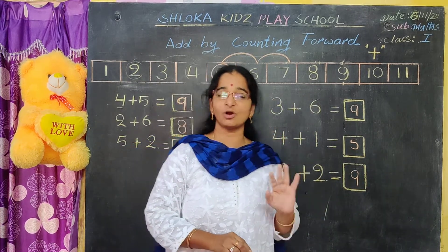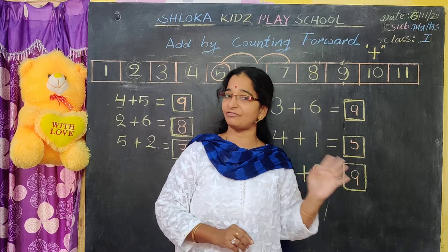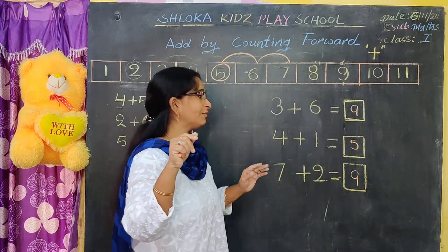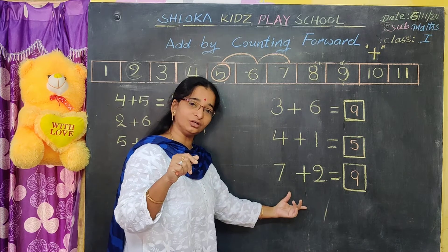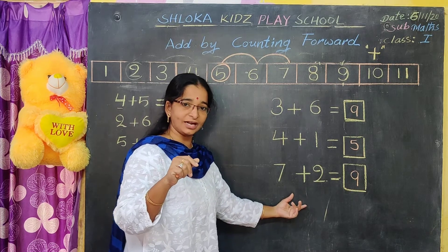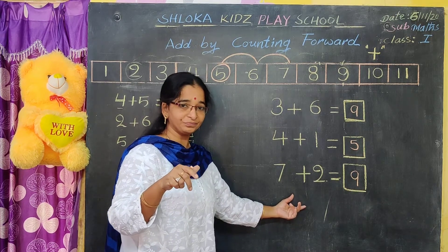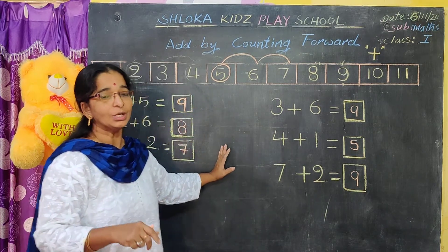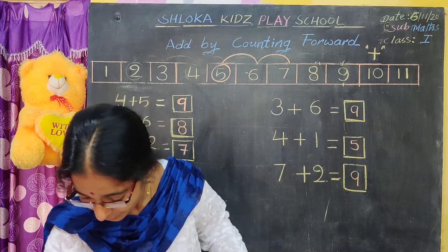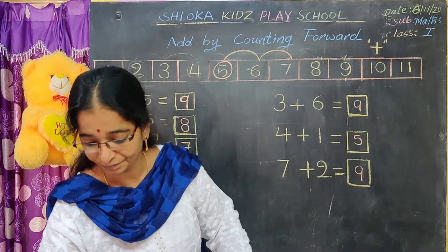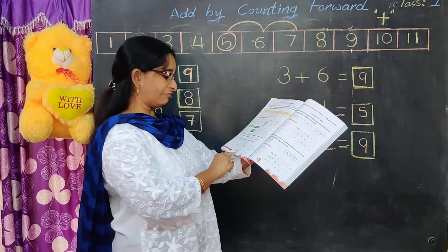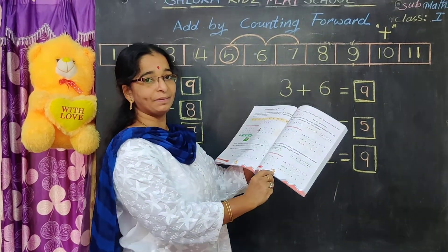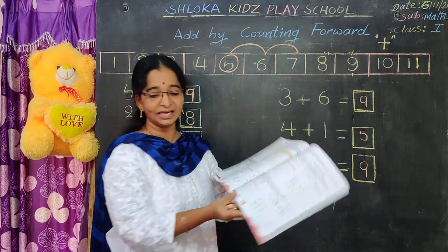You are not small children now that you are in first class. First class children should not draw the lines. Directly like this you have to do it. Like this additions you have to do. You have page number 24 and 25.